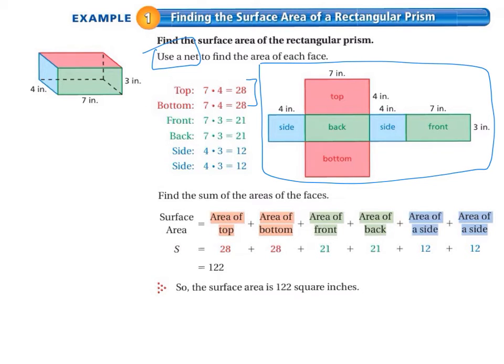And you have that 2 times. You have the front and the back, 7 times 3, and you have that 2 times. So that's 21, 2 times. And then you have each side is 4 times 3, so they're getting this 3 from the end here. So 4 times 3 is 12, and you have that 2 times.